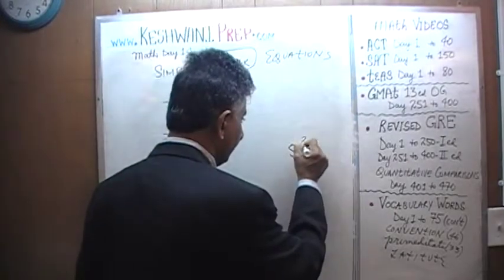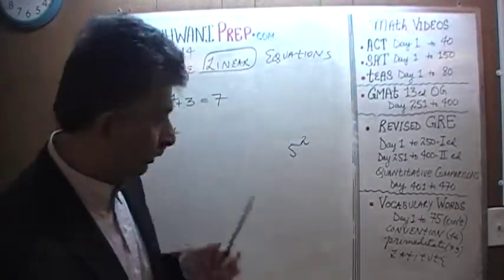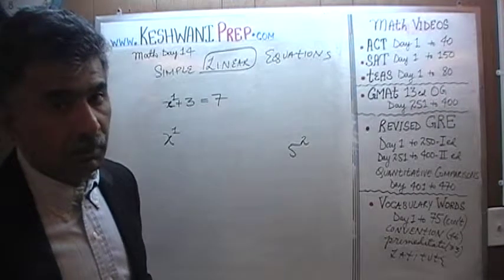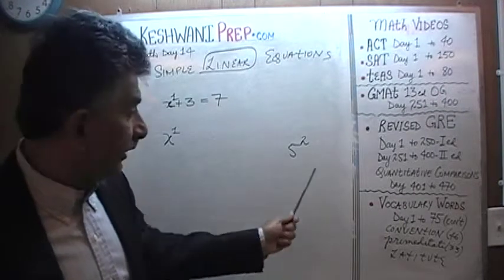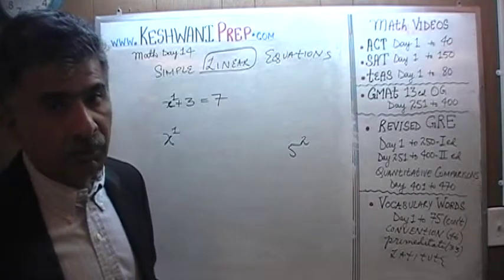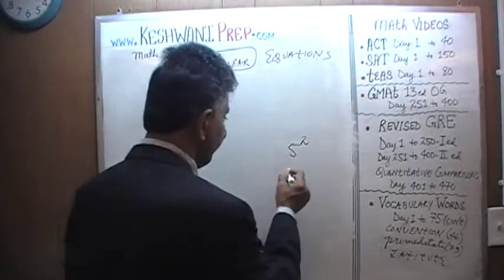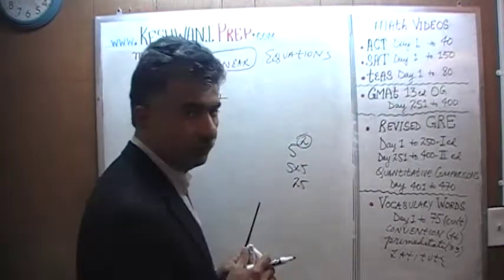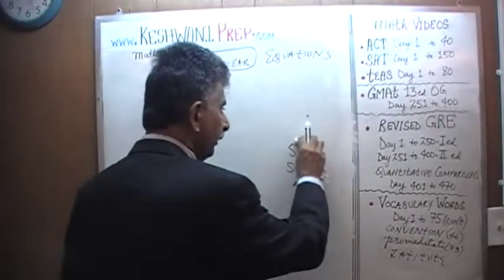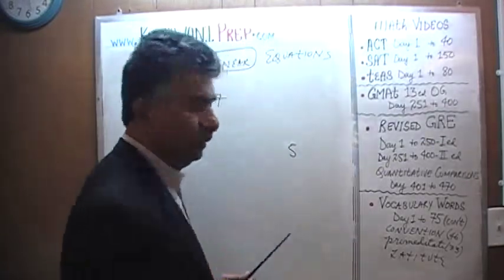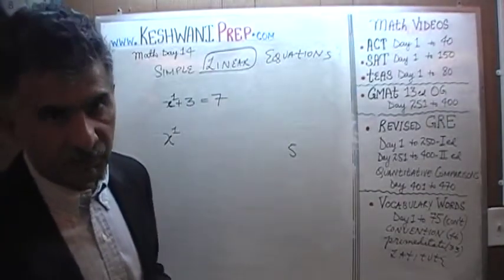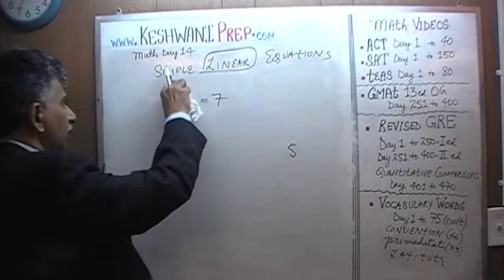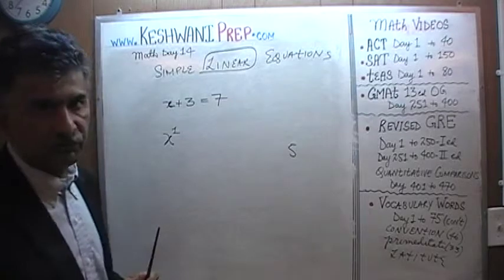On the other hand, if it were 5 raised to 2, we would have no choice but to write the 2, because otherwise we'd think it is just 5. 5 raised to 2 is the same as 5 times 5, which is 25. So in that case we have to put down the exponent. But if it is just the first power, we don't have to. 5 is the same as 5 raised to 1, and x is the same as x raised to 1.